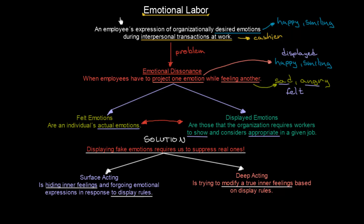We defined emotional labor, then we talked about the problem that occurs here which is emotional dissonance — when employees have to project one emotion while feeling another — so that we have some felt emotions and some displayed emotions. The solution is that displaying fake emotions requires us to suppress real ones, and we can do that two ways: either by surface acting or by deep acting.